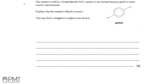The student is told by a friend that the iron trichloride catalyst is not needed because quinol is more reactive than benzene. We need to explain why the student's friend is correct, and we can draw a diagram to support our answer. Quinol has two hydroxy groups directly bonded onto the benzene ring. Let's draw the benzene ring in a slightly flatter configuration to illustrate this.